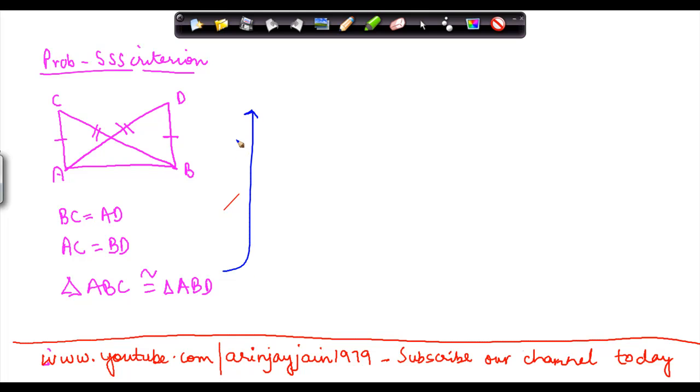Let's see whether this statement is true. If this statement is true, then the three sides of triangle ABC should be equal to three sides of triangle ABD.